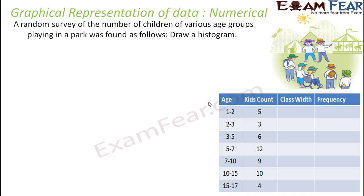A random survey of the number of children of various ages playing in the park was found: 1 to 2 years — 5 kids; 2 to 3 — 3; 3 to 5 — 6; 5 to 7 — 12; 7 to 10 — 9; 10 to 15 — 10; 15 to 17 — 4. We are asked to draw a histogram.